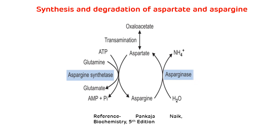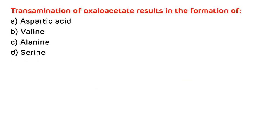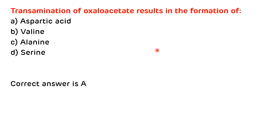Now let's see various multiple choice questions. The first question is: transamination of oxaloacetate results in the formation of — a) aspartic acid, b) valine, c) alanine, d) serine. The answer is aspartic acid — transamination of oxaloacetate results in the formation of aspartic acid. So the correct answer is A.